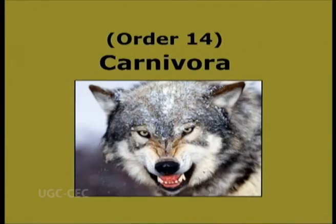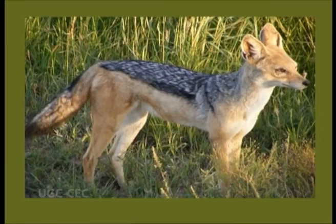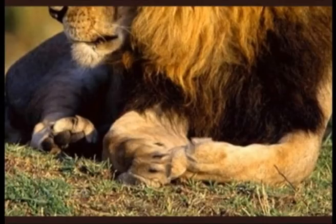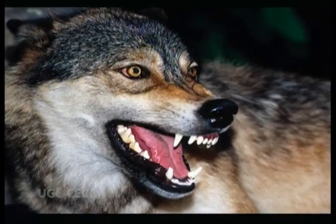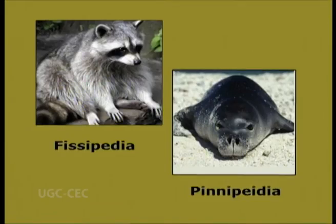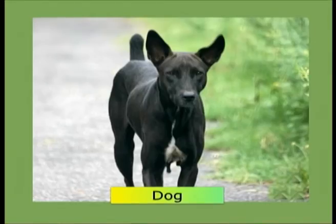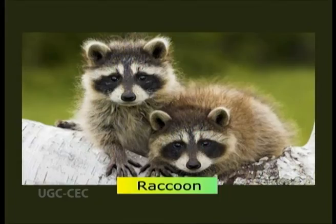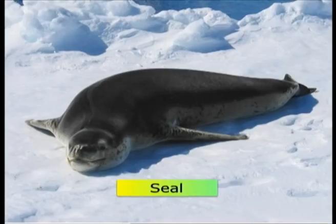Order 14: Carnivora. Caro meaning flesh, Vorare meaning to eat — flesh eating animals. Small to large predatory flesh-eating mammals. Claws are well developed. Incisors are small, canines are large and fang-like, and molars are of cutting type. Living carnivores are divided into two suborders: Fissipedia and Pinnipedia. Examples are dog, wolf, jackal, hyena, raccoon, seal, walrus, etc.